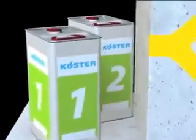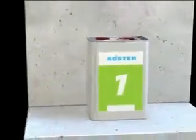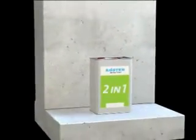To simplify this procedure, Koester has developed a novel injection resin: Koester KB Pure 2-IN-1. When it comes into contact with water, it forms a highly elastic foam that stops the water and displaces it from the crack. When no water is present, it forms an elastic solid body resin.